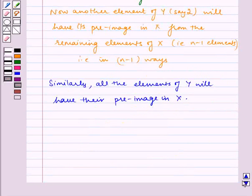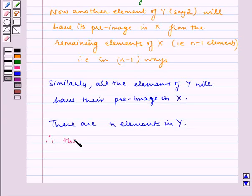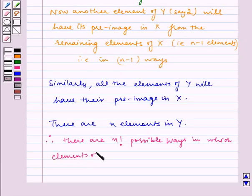Now there are n elements in Y. Therefore, there are n factorial possible ways in which elements of Y can have their pre-image in X.